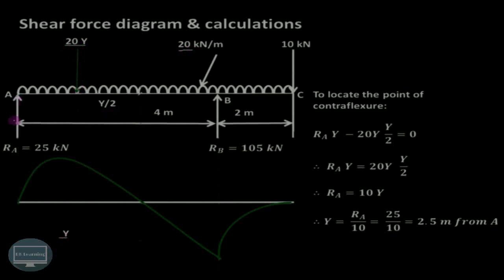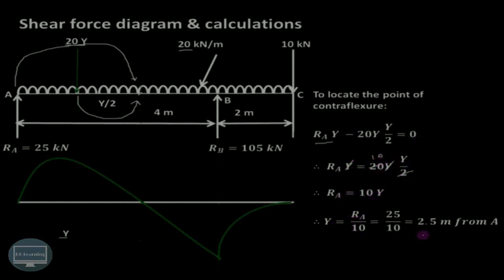So the moment equation is: RA into Y minus 20Y into Y/2 equals zero. One Y term cancels, giving RA equals 10Y, or Y equals RA divided by 10, which is 25 divided by 10 equals 2.5 meters from A. This is the point of contra-flexure — the point at which the bending moment diagram changes sign or the bending moment is zero. In this way we can draw the shear force diagram, find the point of zero shear, draw the bending moment diagram, and find the point of contra-flexure for an overhanging beam.